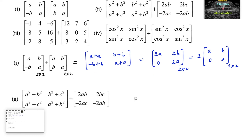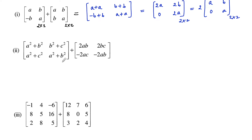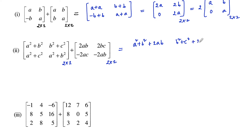Coming to the second one: A² plus B², B² plus C², A² plus C², A² plus B², plus again 2AB, 2BC, minus 2AC, and minus 2AB. Both are again 2 by 2 matrices. Adding corresponding elements: A² plus B² plus 2AB, B² plus C² plus 2BC, A² plus C² minus 2AC, and A² plus B² minus 2AB.